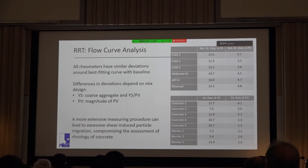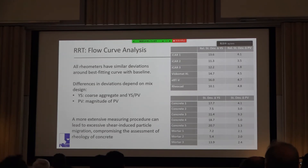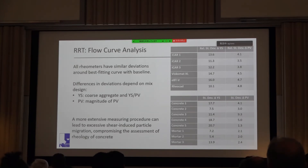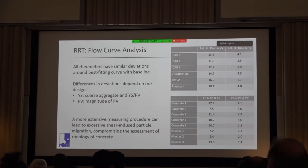In more detailed analysis, we looked at deviations from the baseline curve and whether any one rheometer showed more spread. The answer is no — each device had similar spread relative to the baseline. However, variability depends on mixtures: certain mixtures are more prone to accurate measurement with less variability than others. For yield stress, coarse aggregate content was a disturbing factor — more coarse aggregate led to more variability compared to mortars. Higher yield stress with lower viscosity was also a factor. For viscosity, higher viscosity correlated with more spread. One tool with a more extensive measuring procedure showed a negative effect in concrete, which we attribute to shear-induced particle migration.